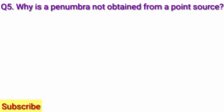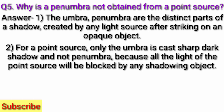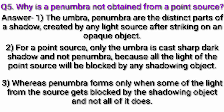Question 5: Why is a penumbra not obtained from a point source? Answer: The umbra and penumbra are the distinct parts of a shadow created by any light source after striking on an opaque object. For a point source, only the umbra is cast — a sharp dark shadow — and no penumbra. Because all the light of the point source will be blocked by any shadowing object. Whereas penumbra forms only when some of the light from the source gets blocked by the shadowing object and not all of it.